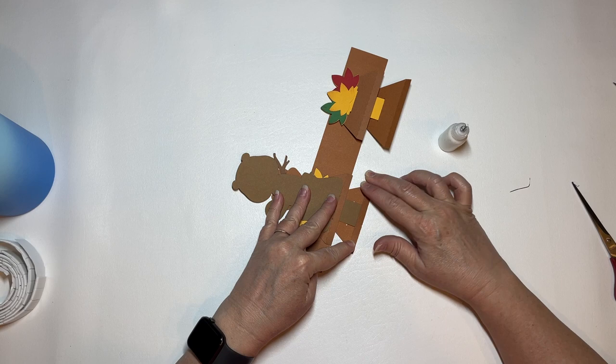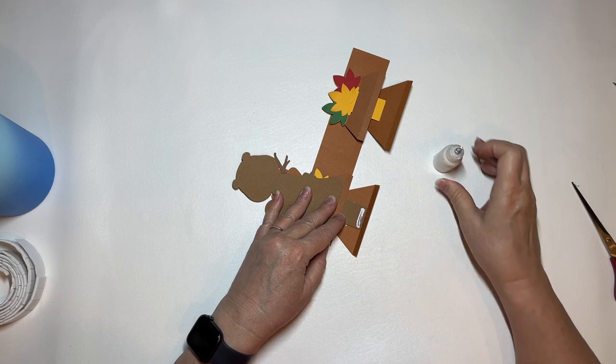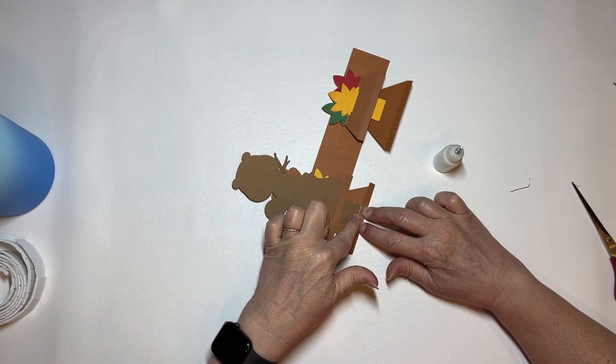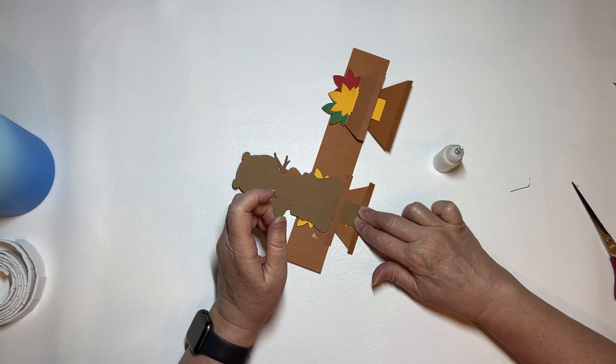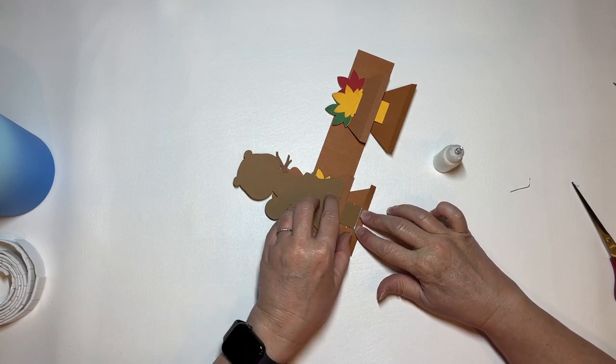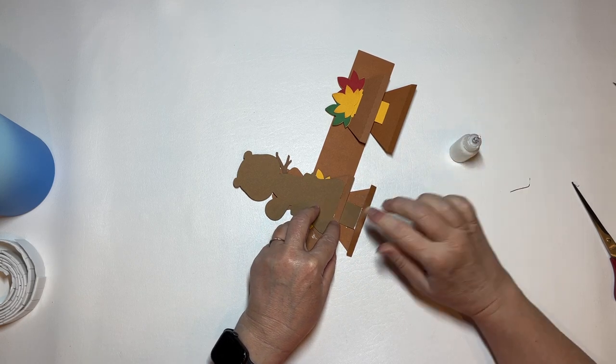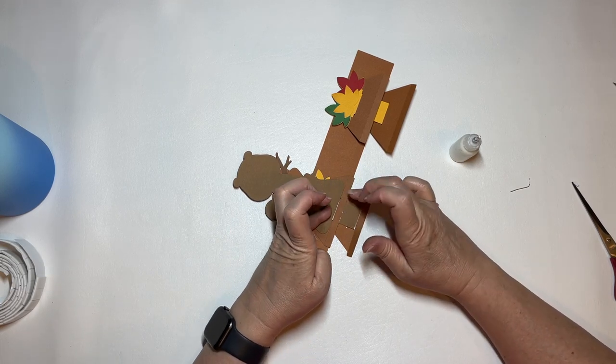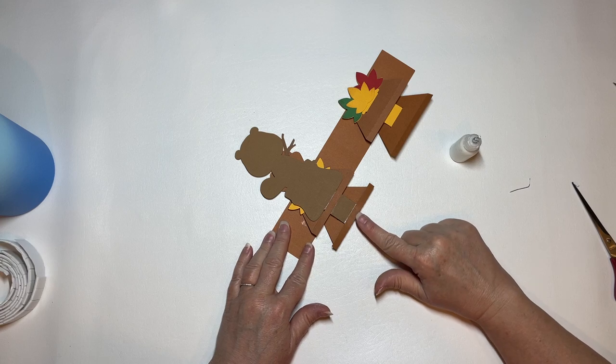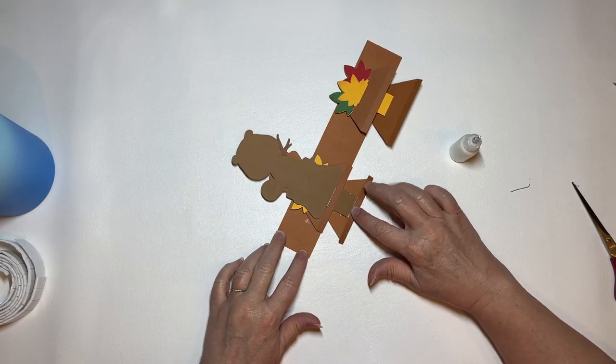I'm going to fold this bottom tab up and I'm going to glue the tab to the beaver, being careful not to let the glue get out over the sides and glue my card shut. There we go, I've got that attached. And now you need to put glue under this top tab and glue it here to the center as well. And now you'll see if you push up here on the bottom, it lifts this top piece and the bottom piece.